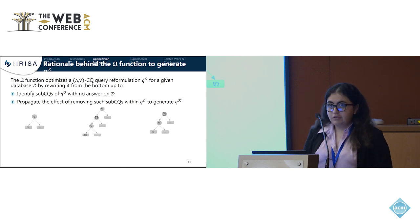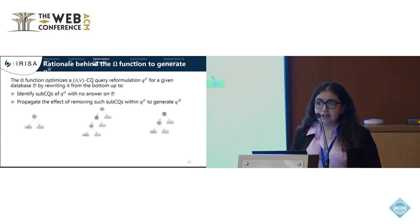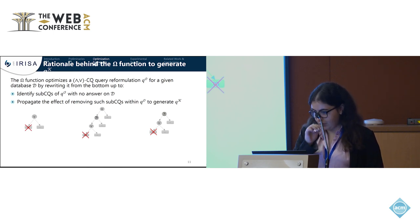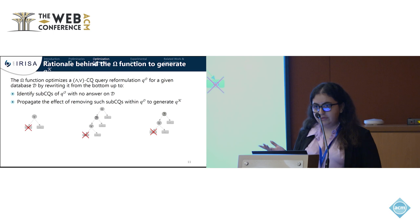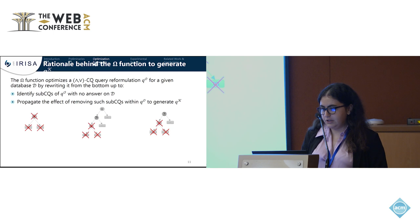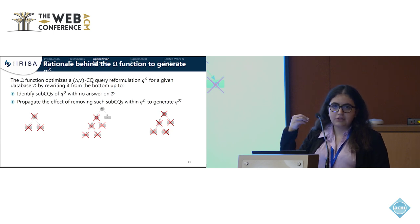The omega function is an optimization function that rewrites a query formulation from the bottom up by identifying empty sub-conjunctive queries that have no answers on the database. If we find that a conjunctive query at the bottom of our union or join is empty, we remove it. When we remove all conjunctive queries from a union, we remove the union operator as well. When we remove one part of a join, we remove the whole join operator and its subqueries.